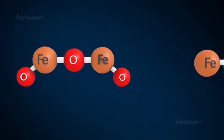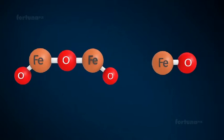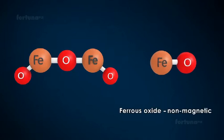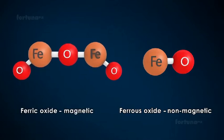The products that are formed due to the variable valency of atoms differ in their properties. Looking back at the bonding of iron, ferrous oxide is a non-magnetic substance, while ferric oxide is magnetic.